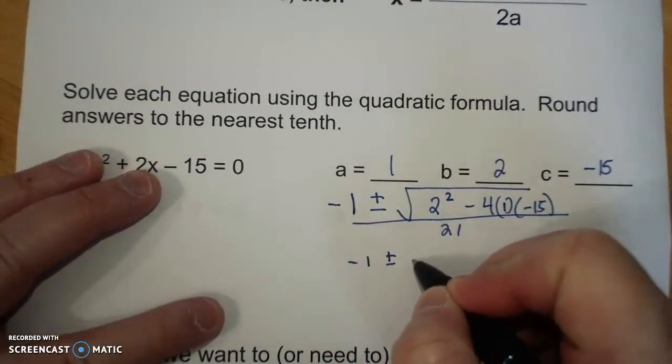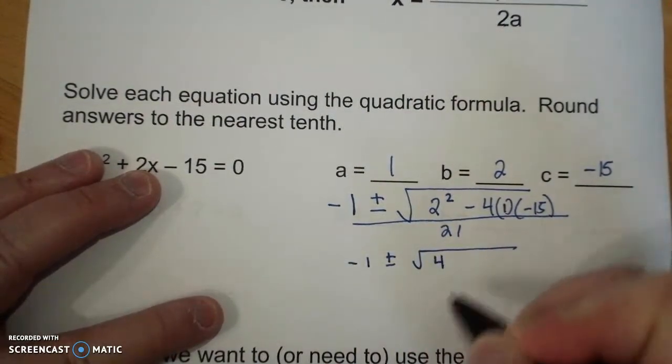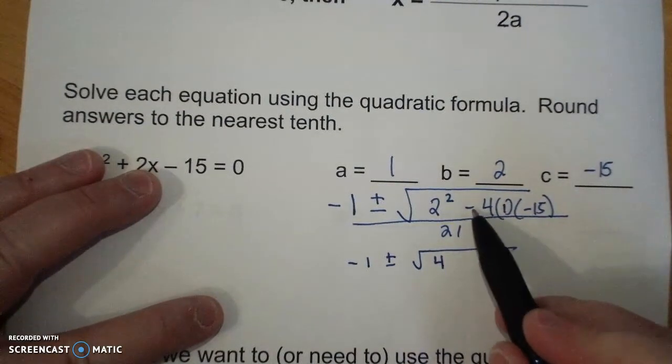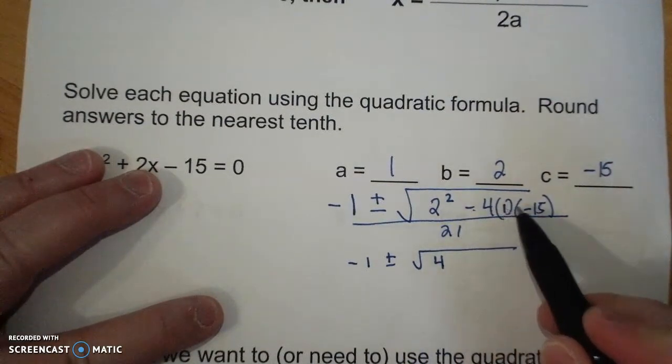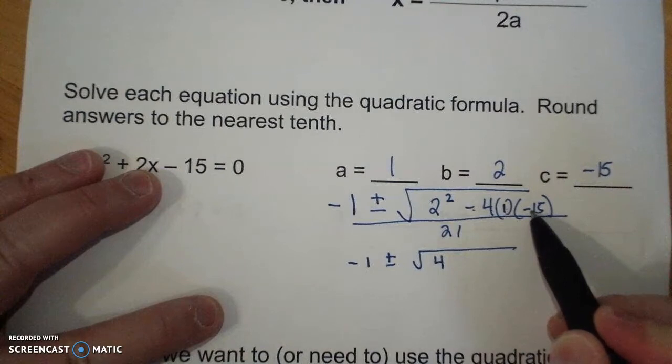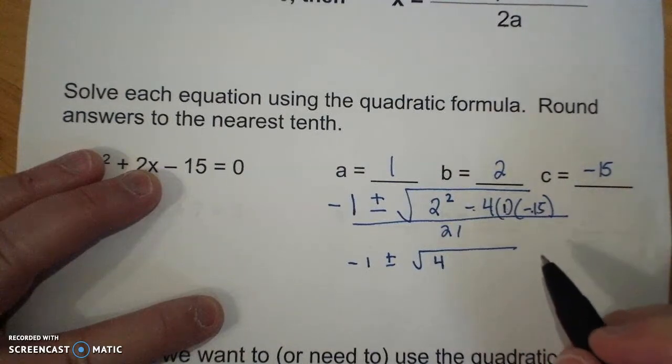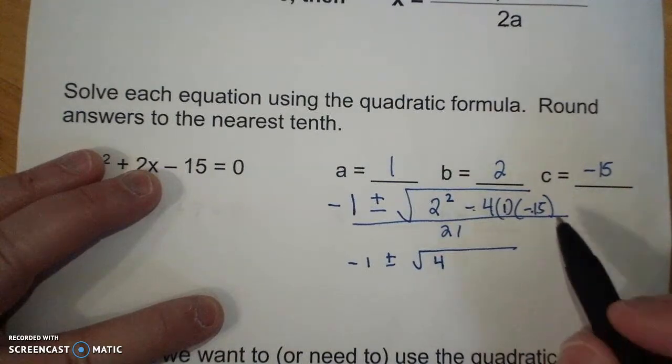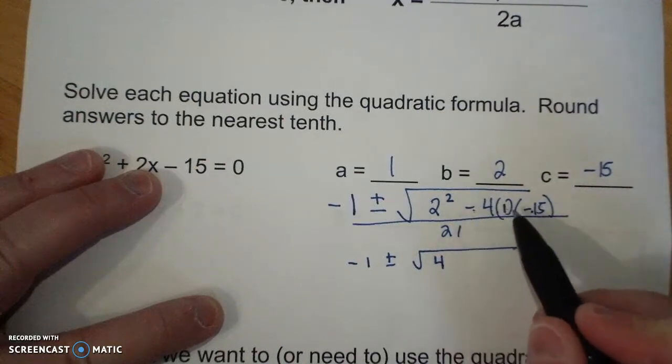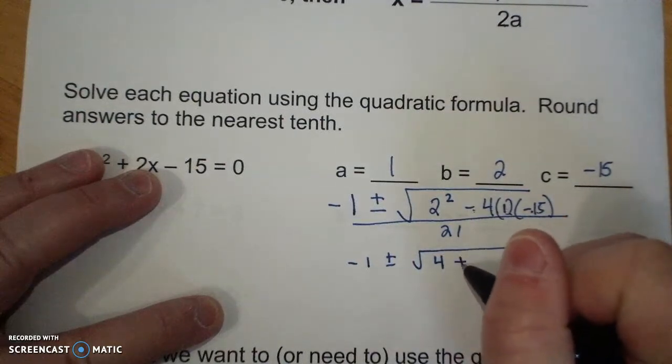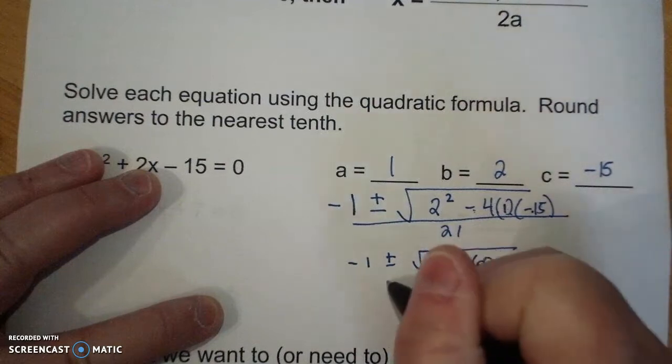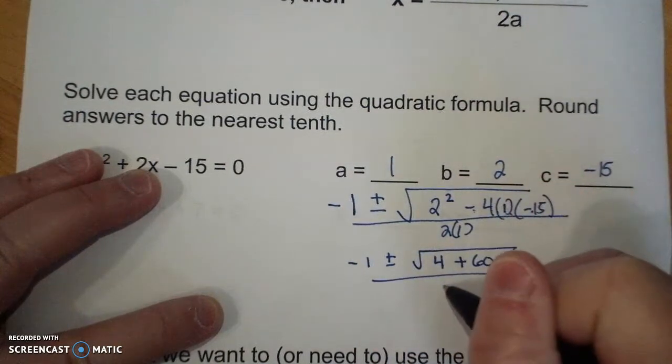So I have negative 1 plus or minus the square root of 4. Negative 4 times 1 times negative 15 is 61, so that's 60, all over 2.